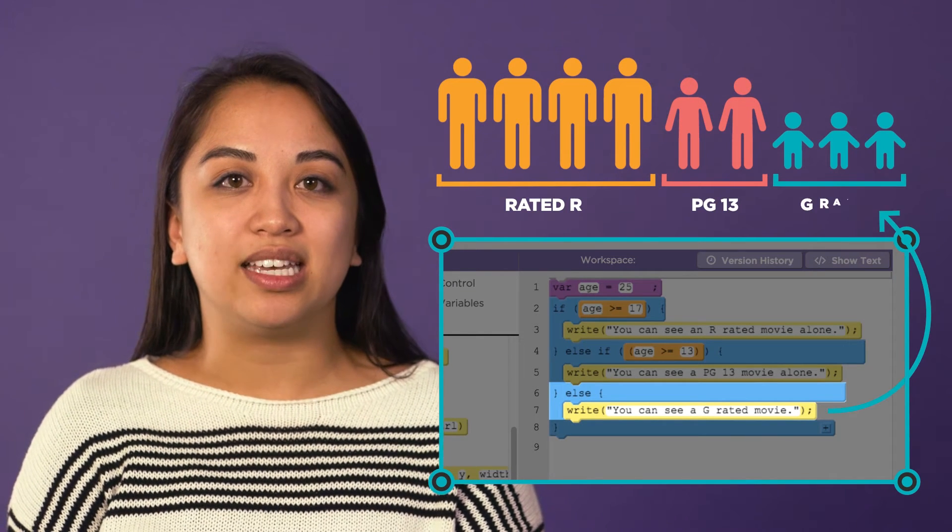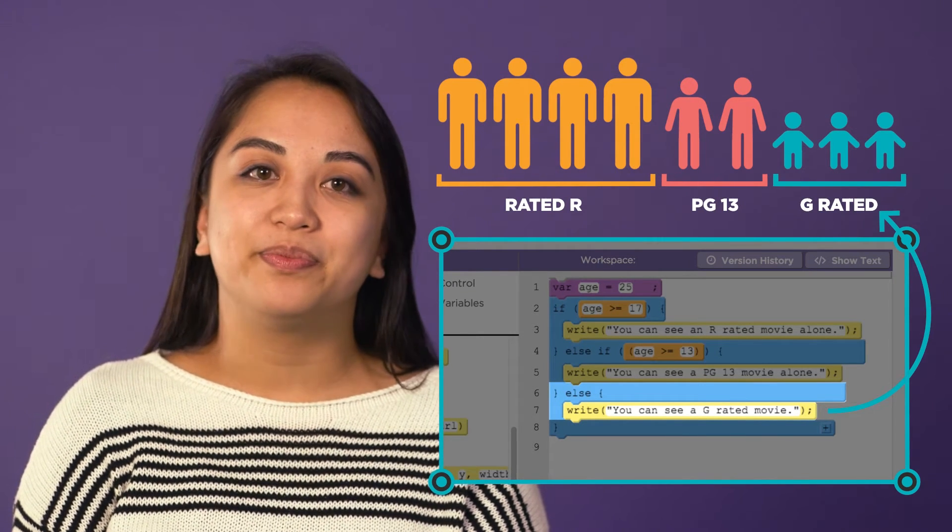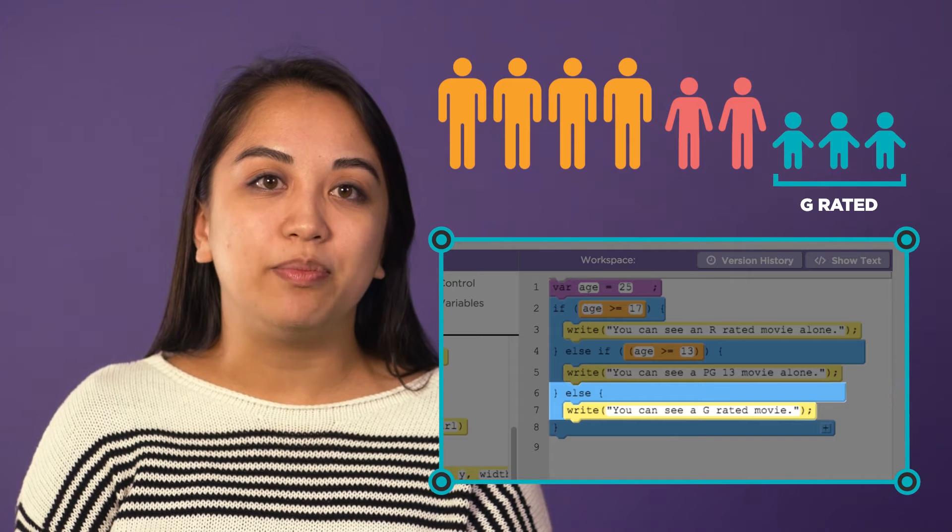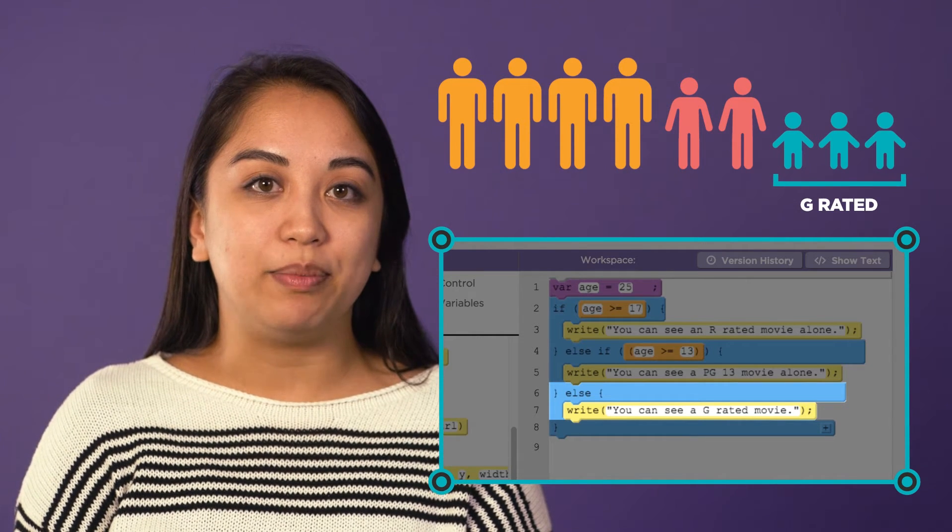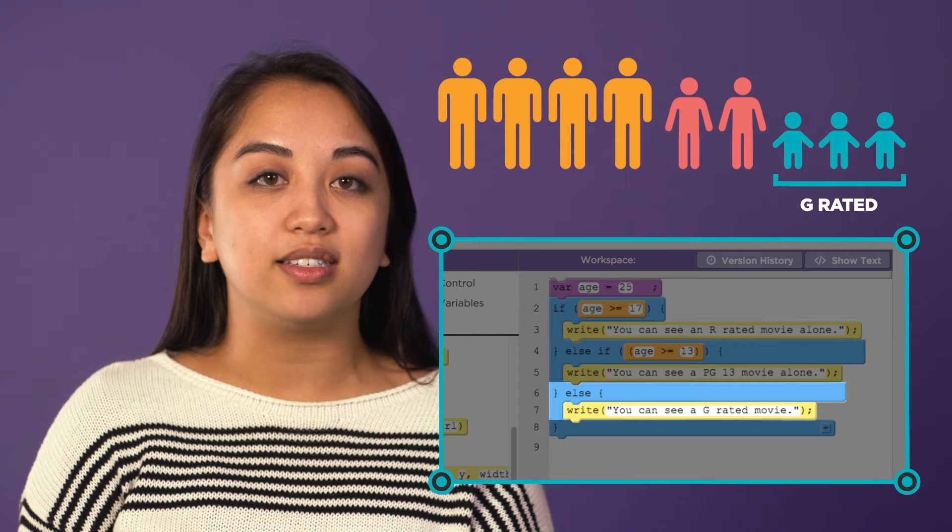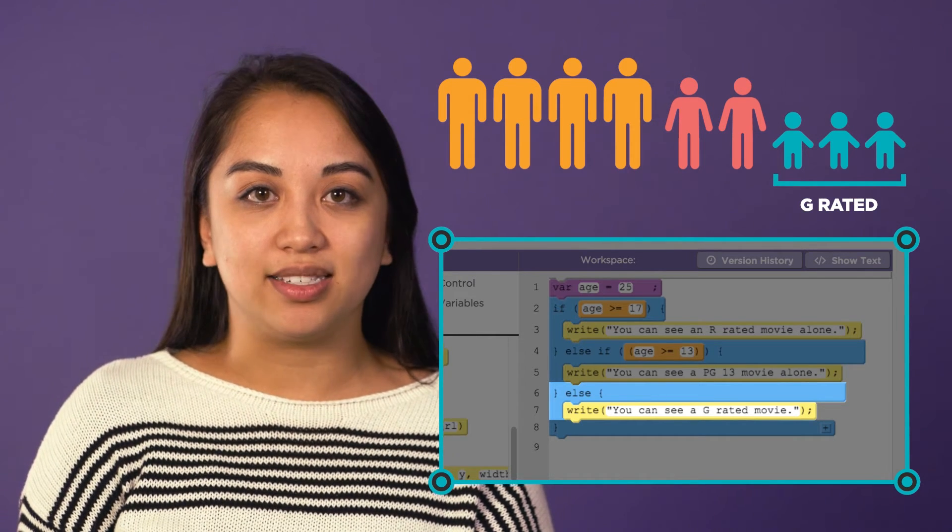Else, write that the user can see a G-rated movie alone. The else condition becomes the default condition, because when all the previous if and else if statements are false, it will default to the else statement.